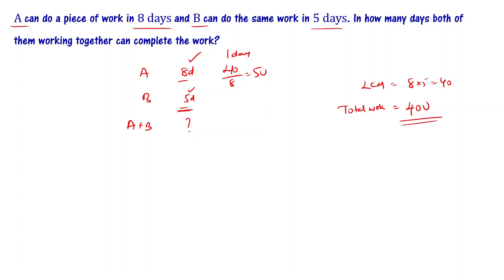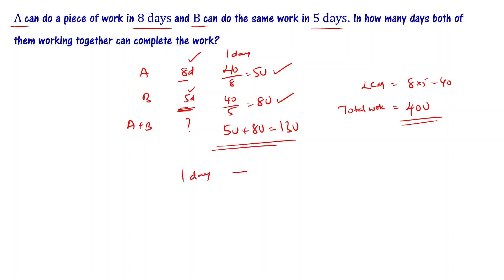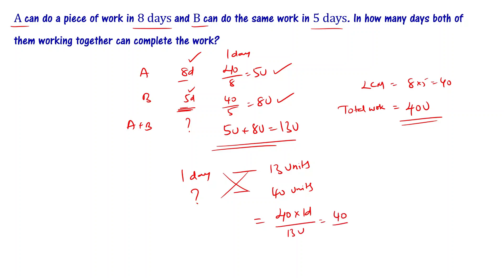In 1 day, B completes 40 units in 5 days, so 40 by 5 equals 8 units. Therefore A plus B together in 1 day complete 5 plus 8 equals 13 units. So the number of days is 40 divided by 13 days. The numbers are the same — that's the units-based method, a simple approach.